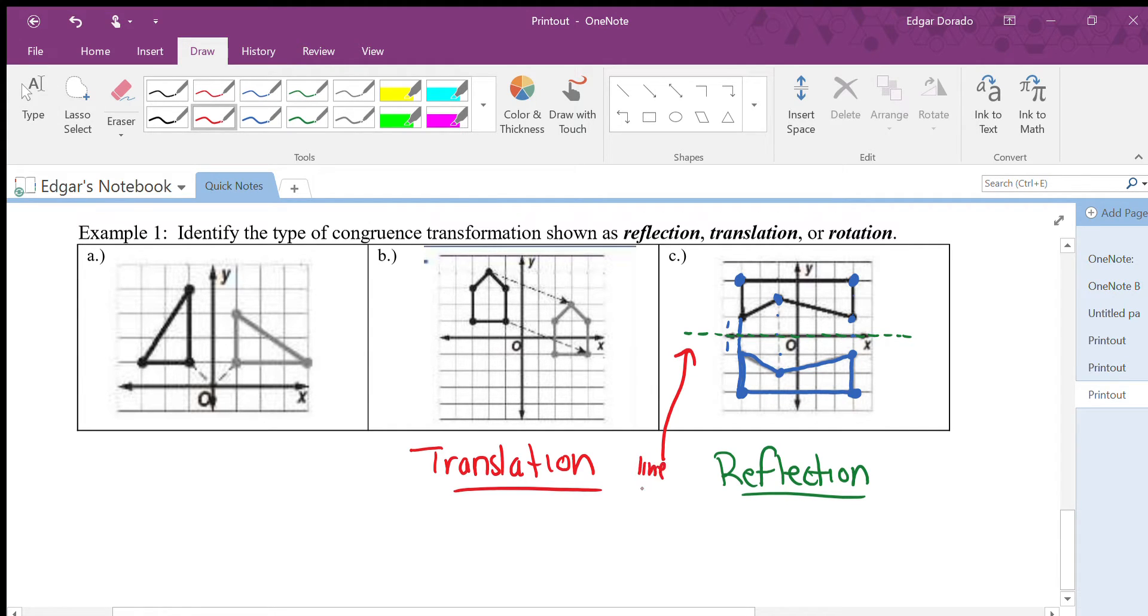Same exact thing here, same exact thing here. So every single one of these reflected across this line. Remember this is my line of reflection. So yes, letter C was a reflection.